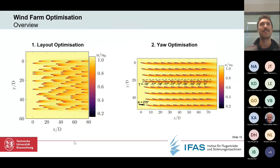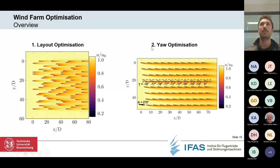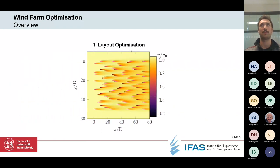Now for the most colorful part of the presentation — optimization. There are two separate optimizations, not connected to each other. The first is a layout optimization with fixed yaw angles, where all turbines face fully into the wind at zero yaw while turbine positions are the degrees of freedom. The second is a yaw optimization with fixed turbine positions using the Hornsrev 1 reference grid, where yaw angles are the degrees of freedom.